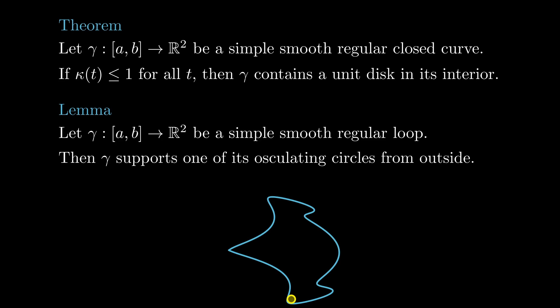The reason the theorem follows from the lemma is because, under the curvature assumptions of the theorem, the osculating circles on the inside have curvature at most 1, and then radius at least 1.